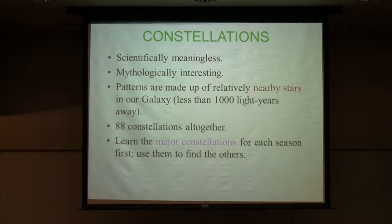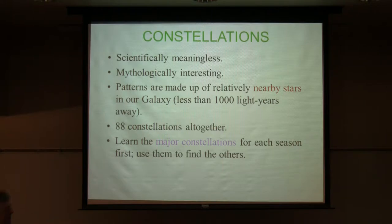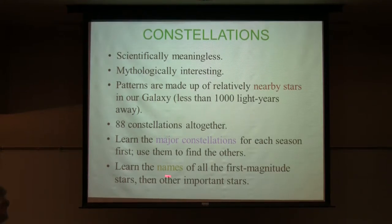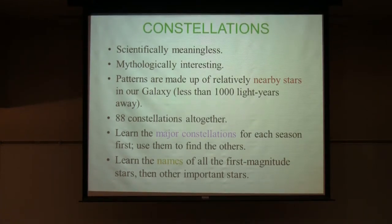What you do need to do is learn the major constellations for each season of the year. You've got to know Orion, Canis Major, Scorpius, and Sagittarius — those are ones you absolutely have to know, and they will help you find other constellations. You should also learn the names of all the first-magnitude stars. There are only about 20 of them, and several you can't see from here anyway, so it's a manageable task. Learn a few other important ones like Polaris the North Star, and Castor in Gemini.